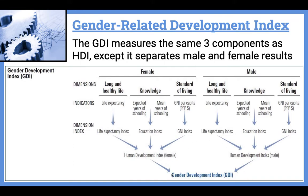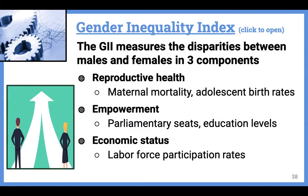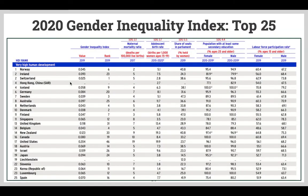If there's a big gap between those two numbers, we know that there are some gender equality issues. The other index commonly used is the Gender Inequality Index, or GII. This uses three components: reproductive health, empowerment, and economic status. Ranking at the top of this list — meaning the most gender equality in 2020 — was Norway. Norway also ranked number one in the Human Development Index.